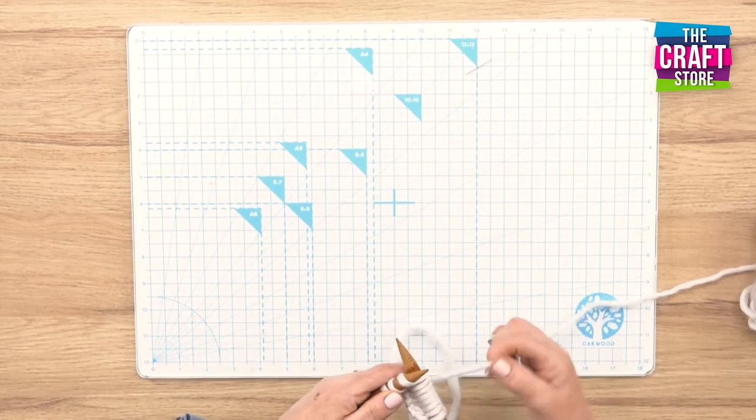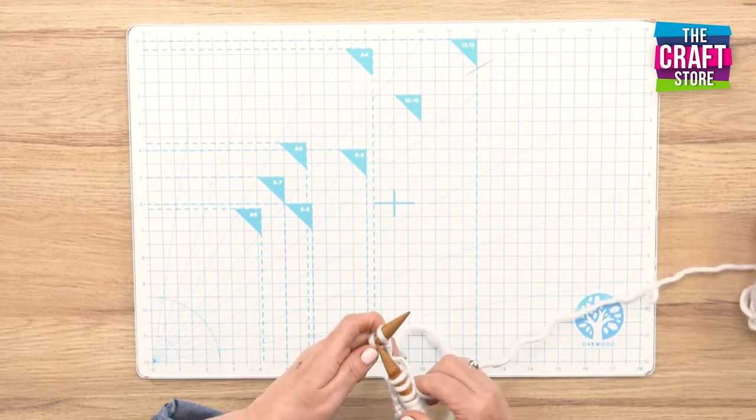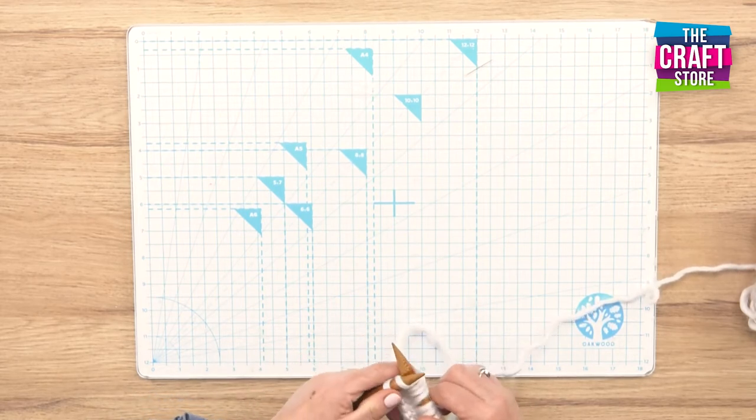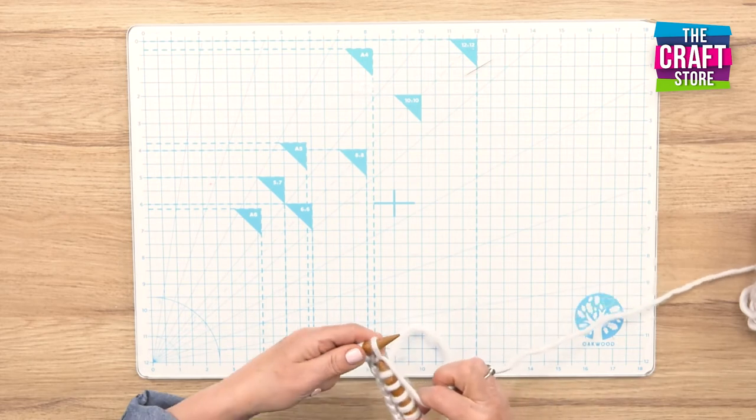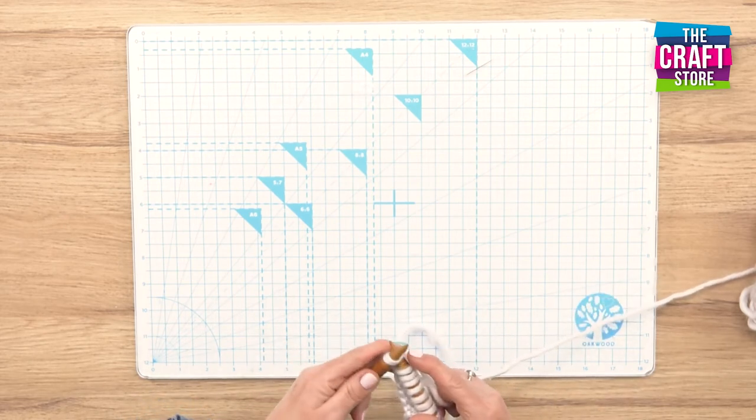So if you just get this stitch right you're on your way, because basically everything's made up of a knit stitch and a purl stitch. So I'm going to show you the purl after we've done this knit.